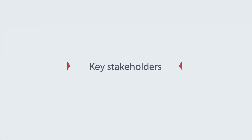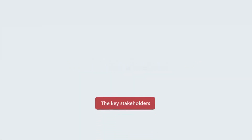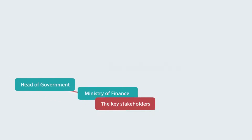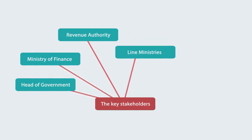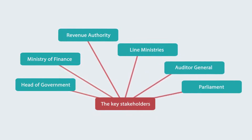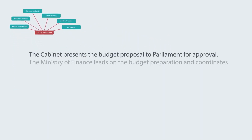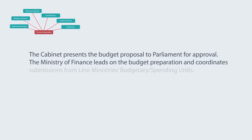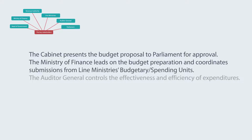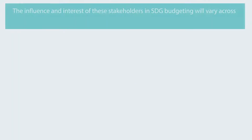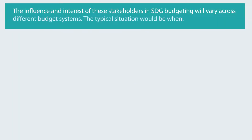The key stakeholders in the budgeting process include Head of Government, Ministry of Finance, Revenue Authority, Line Ministries, Auditor General, and Parliament. The Cabinet presents the budget proposal to Parliament for approval. The Ministry of Finance leads on budget preparation and coordinates submissions from Line Ministries' budgetary or spending units. The Auditor General controls the effectiveness and efficiency of expenditures. The influence and interest of these stakeholders in SDG budgeting will vary across different budget systems.